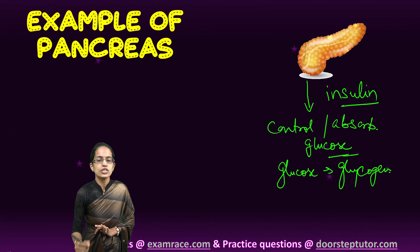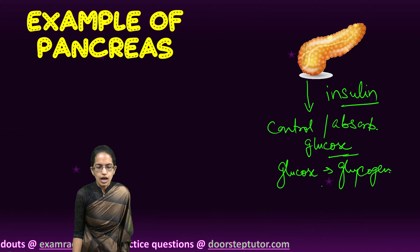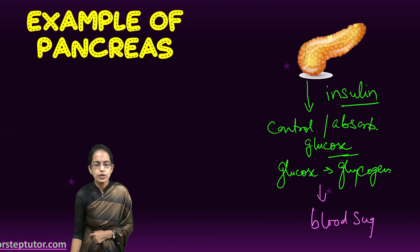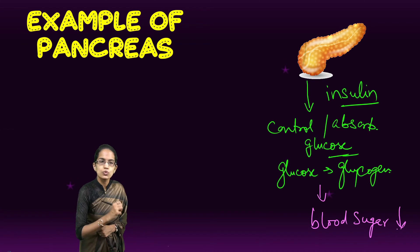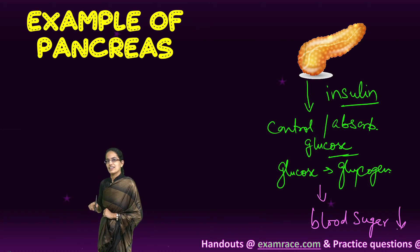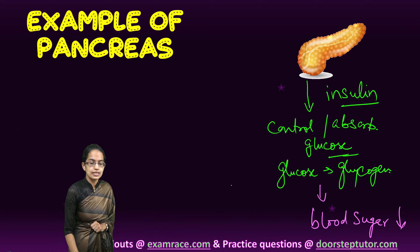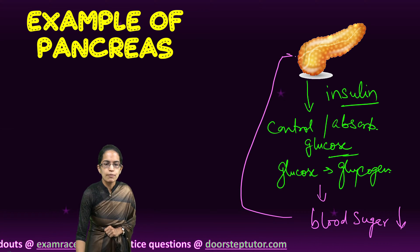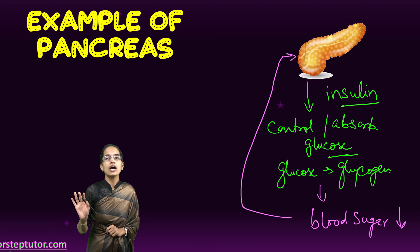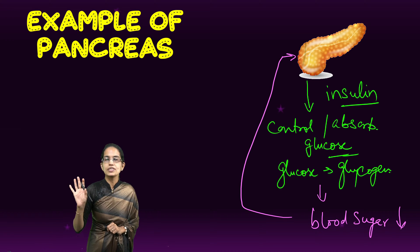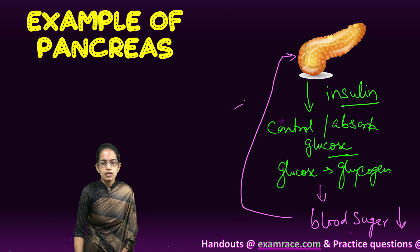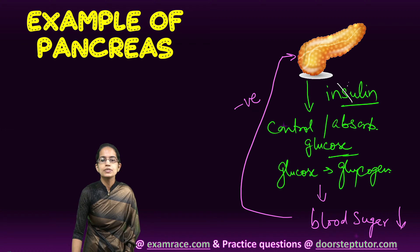The process of conversion of glucose to glycogen starts. With this process, my blood sugar levels would go down and come towards normal. But if they keep dropping, there should be a point where the signal goes back to the pancreas — my blood sugar levels are down, stop secreting insulin. As soon as this negative feedback goes, the pancreas would stop secreting insulin.